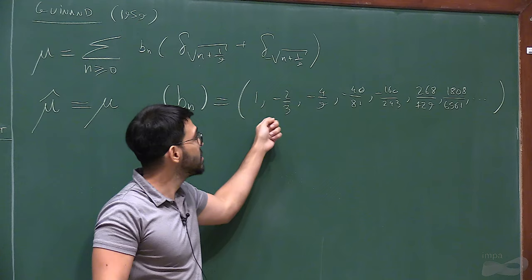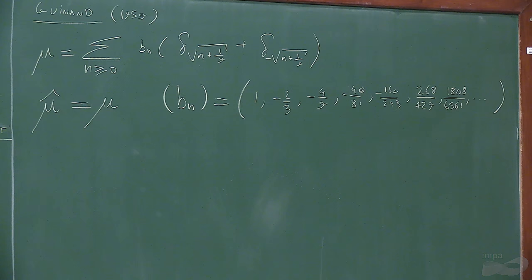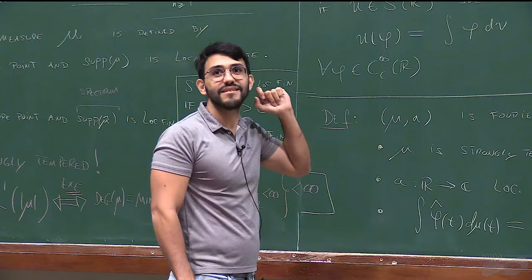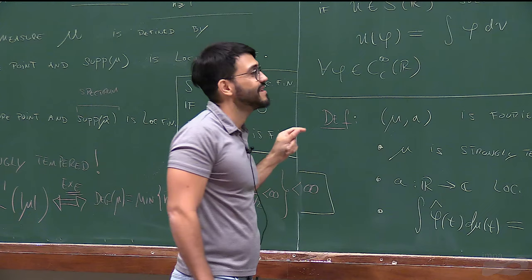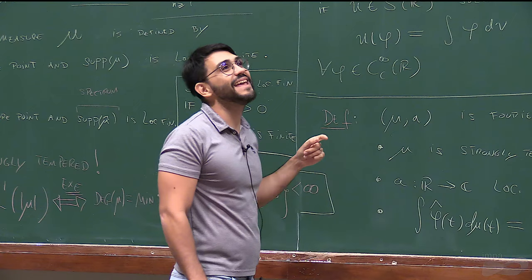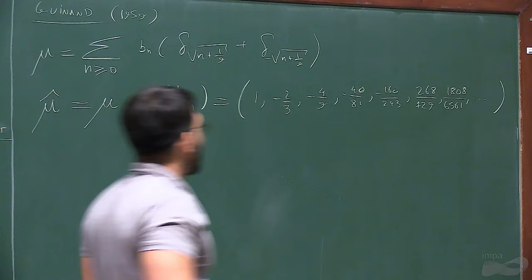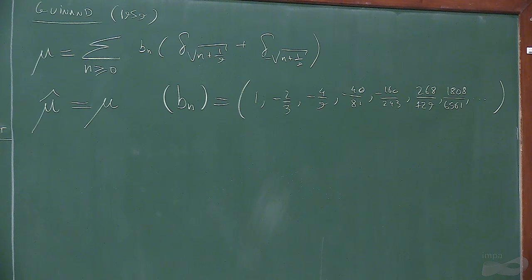Guinand used modular forms of half-integral weight in 1959. It's worth noting that he claimed he took this formula from a book of Landau from 1909. He didn't write it as a modular form—he used Poisson summation in a clever way to prove this, without that baggage. But you can reinterpret his result in terms of modular forms.